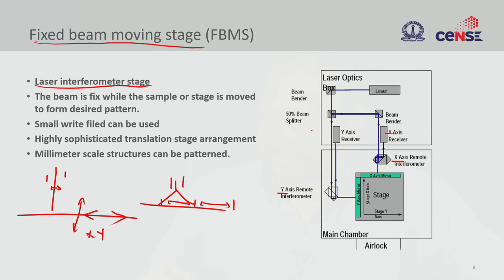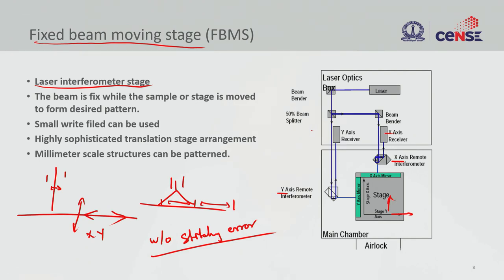By doing this, we are able to write millimeter-scale structures with very high resolution without any stitching error. This has allowed large-area patterning without stitching error. You can write very large, millimeter-size features because you are not deflecting the beam — your movement depends on the x-y motor range, not on your electron beam deflection. You have a sophisticated interferometric setup to control the stage position.